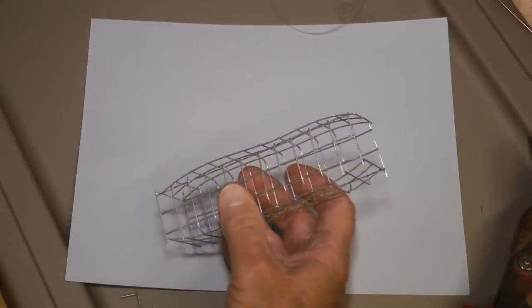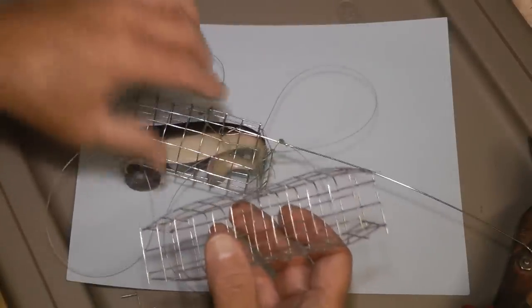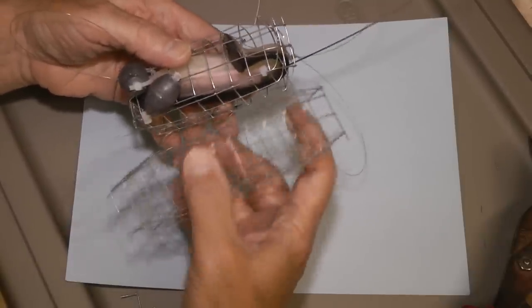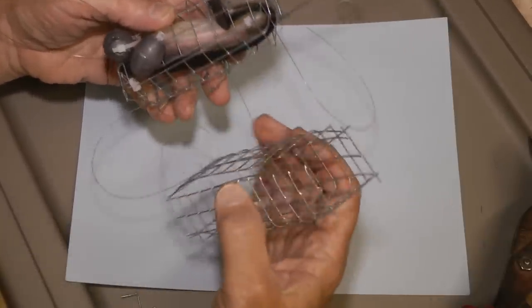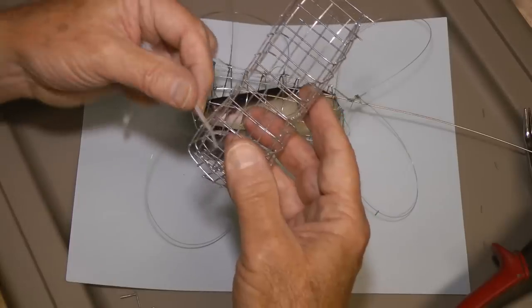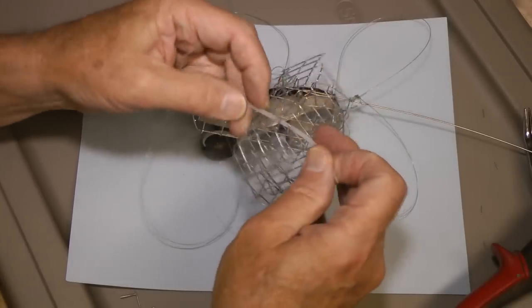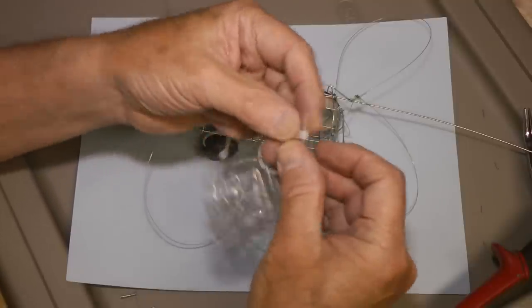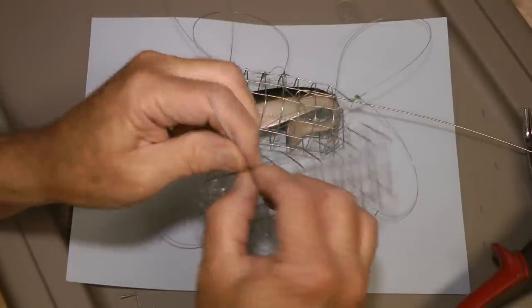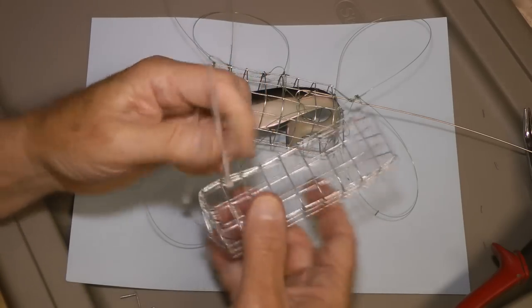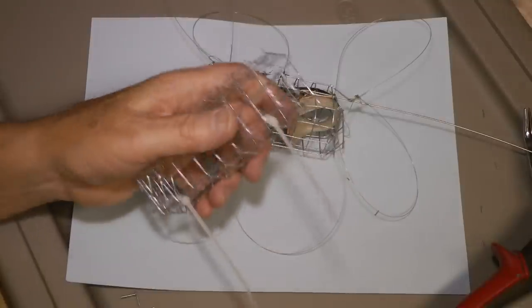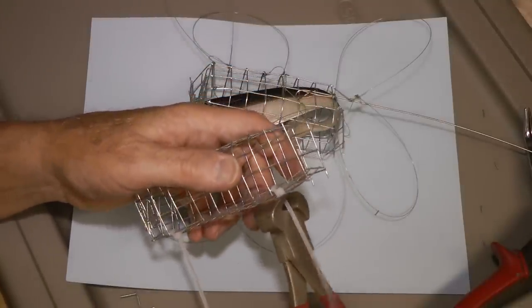We take and put a couple of tie wraps on there to hold that together. We just take a couple of tie wraps and come just a third of the way in maybe where those two ends meet. We'll pull that up tight, just snug those up nice. We'll clip them off.